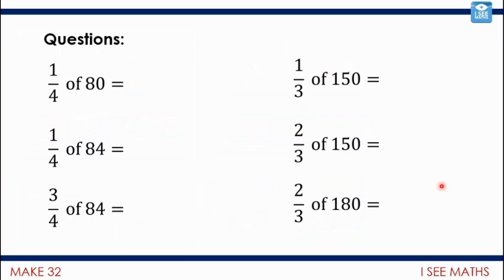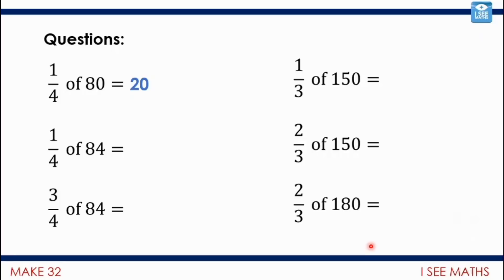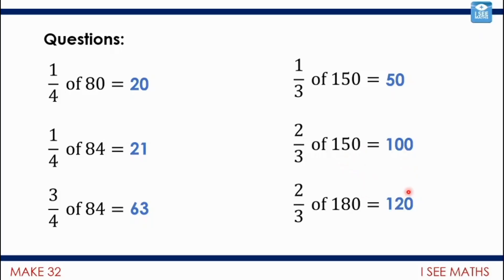Have a go at these linked questions. A quarter of 80 is 20 - 80 divided by 4. A quarter of 84 is 21, so three-quarters of 84 is 63. A third of 150 is 50, so two-thirds of 150 is 100. Two-thirds of 180: one-third is 60, so two-thirds is 120. Note that 180 is 30 more than 150, so two-thirds of that extra 30 is an extra 20 - giving 120. Did anyone spot that link?